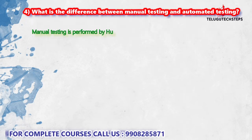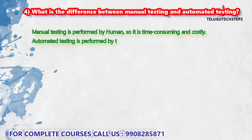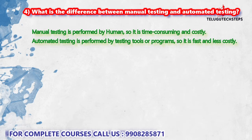What is the difference between manual testing and automated testing? Manual testing is performed by humans. It is time-consuming and costly. Coming to automation testing, it is performed by testing tools or programs, so it is fast and less costly.